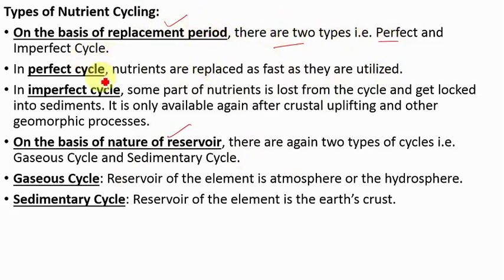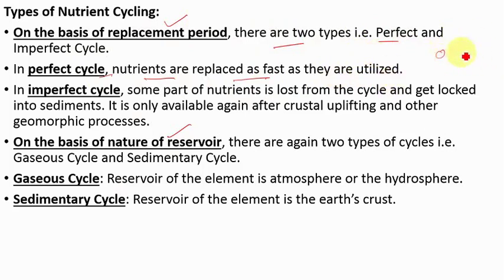In the perfect cycle, nutrients are replaced as fast as they are utilized. By this I mean that nutrients are not lost somewhere or deposited for a long time at some remote place where they are not accessible. In the perfect cycle, nutrients are cycled and recycled continuously — as soon as they are consumed, they are replaced. You will know about them in more detail in later slides.